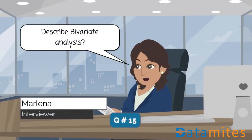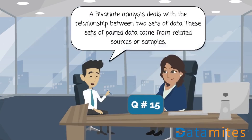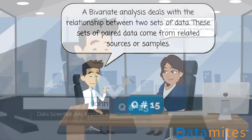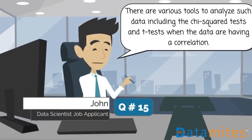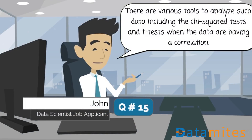Describe bivariate analysis. A bivariate analysis deals with the relationship between two sets of data. These sets of paired data come from related sources or samples. There are various tools to analyze such data, including the chi-squared tests and t-tests when the data have a correlation.